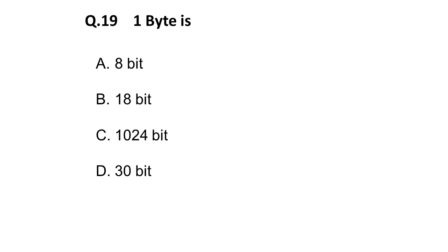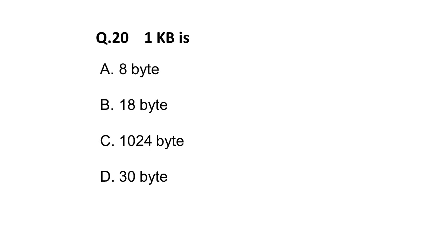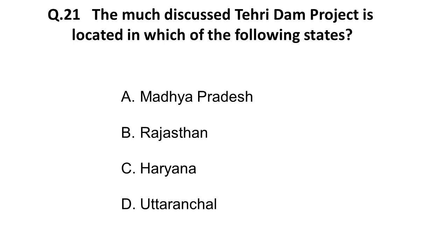Next question: one byte is — A: 8 bits, B: 18 bits, C: 1024 bits, D: 30 bits. Remember this memory conversion because at least one question will be asked in the Teaching Aptitude paper in the ICT section. One byte is equal to 8 bits. Moving on: one kilobyte is equal to — options are 8 bytes, 18 bytes, 1024 bytes, and 30 bytes. The correct answer is 1024 bytes. One kilobyte equals 1024 bytes.